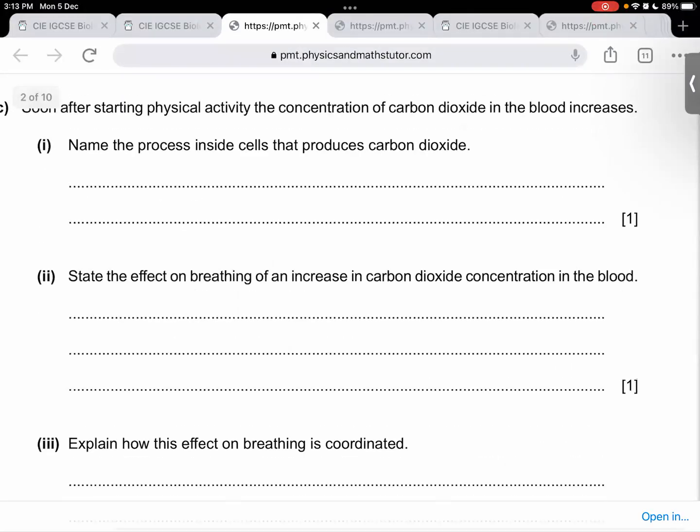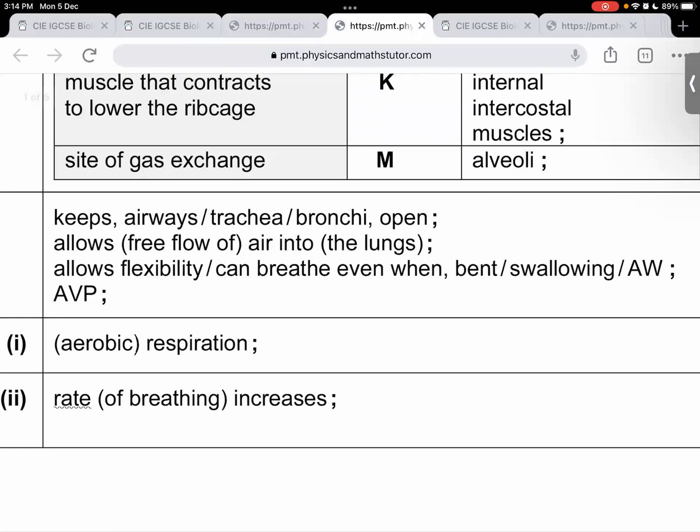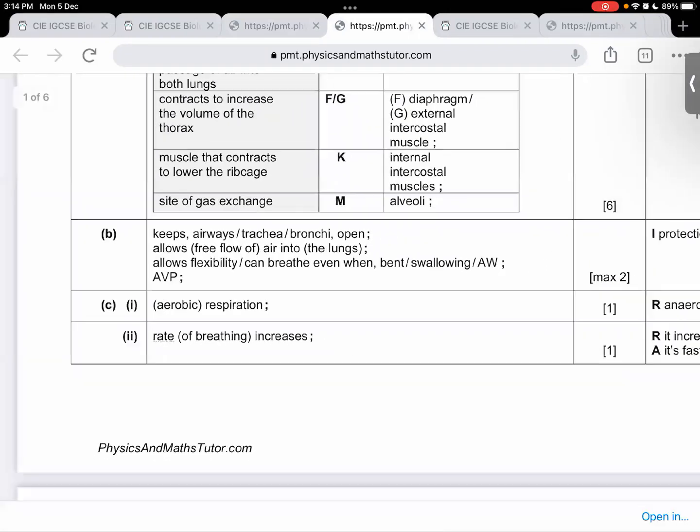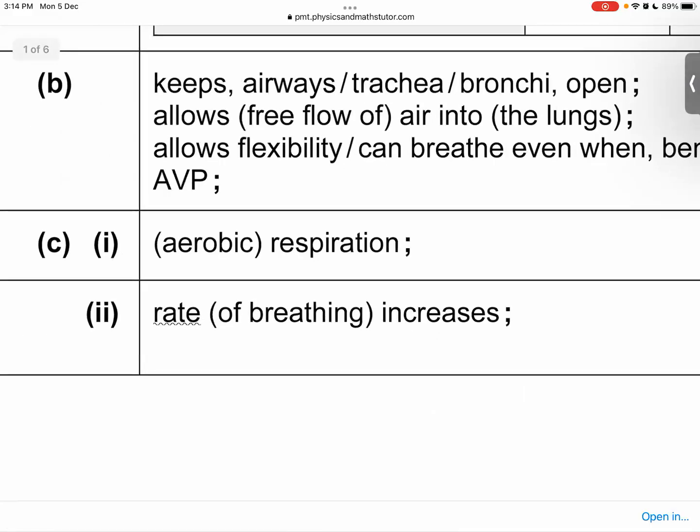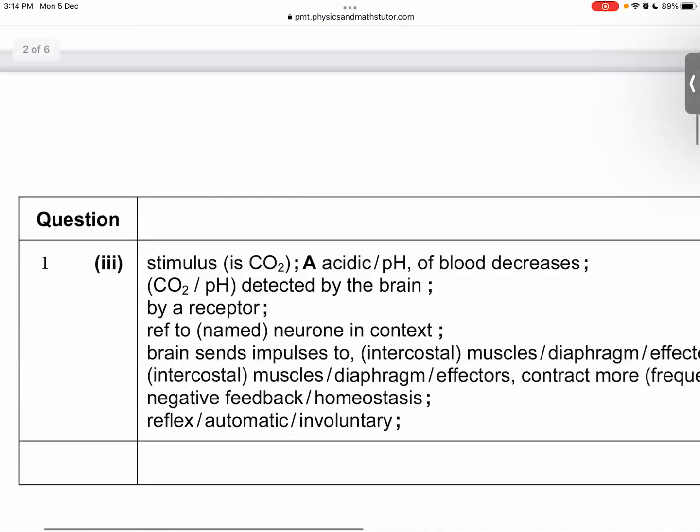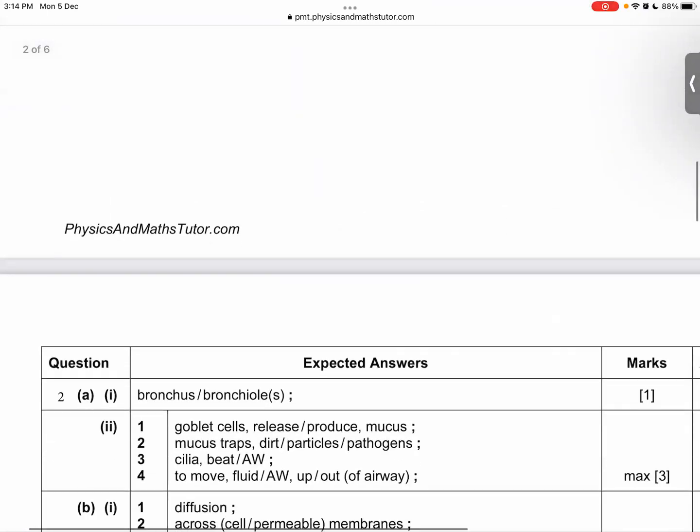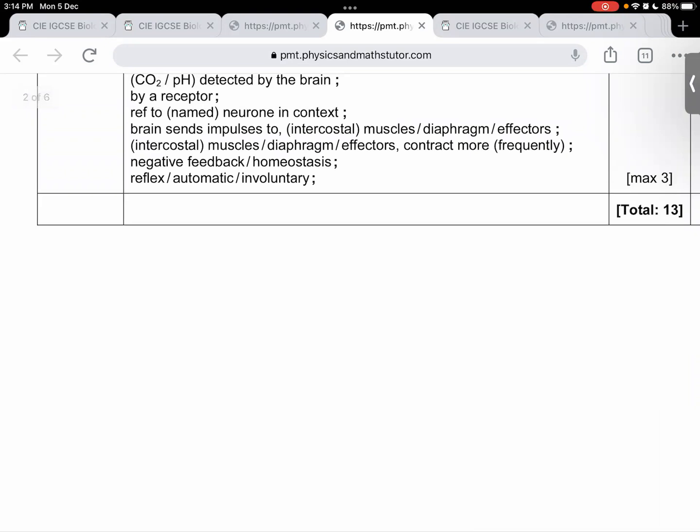Explain how this effect on the breathing is coordinated. How this effect on the breathing is coordinated? Aerobic respiration. That is correct. The second question was should the rate of the breathing increase or decrease? And how is this coordinated? This is not a part of the syllabus. This is a nervous system question. So, let's just forget it. No need to worry.